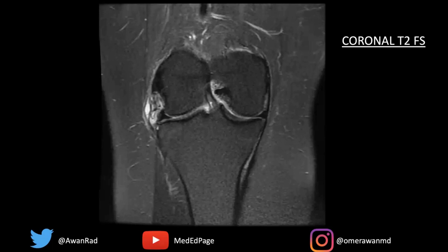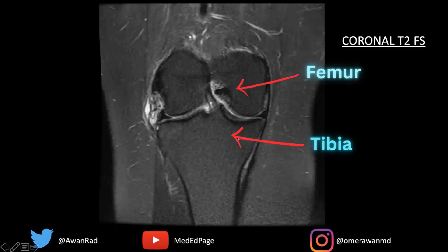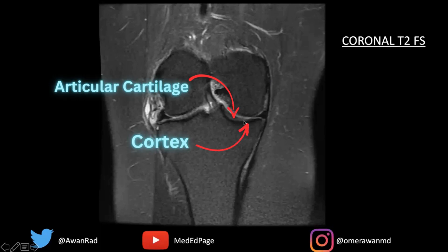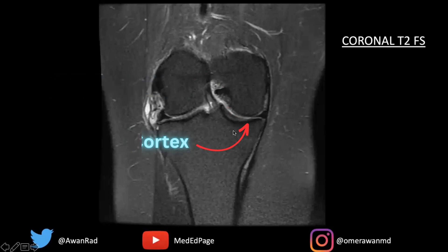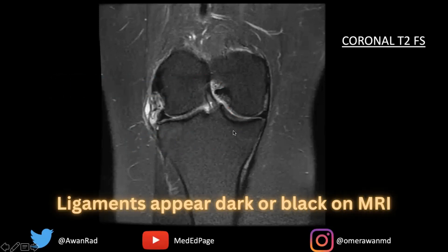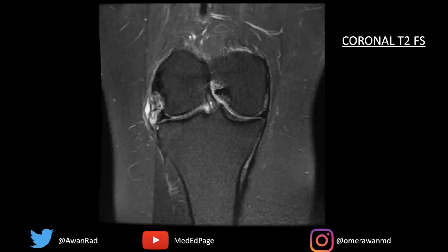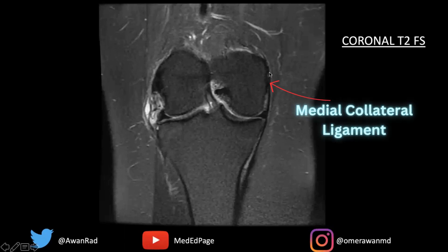If we take a look at this image, this is the tibia, this is the femur, this dark black line is the cortex of the bone, and this gray intermediate signal is the articular cartilage. Remember that all ligaments are going to be dark or black on every MRI sequence — T1, T2, STIR, post-contrast — it doesn't matter. This here is the medial collateral ligament, this dark black linear structure ascending from the medial femoral condyle to the proximal tibia, usually five to seven centimeters above the joint to five to seven centimeters below the joint.